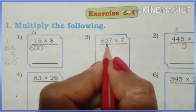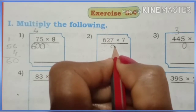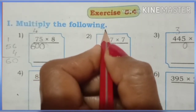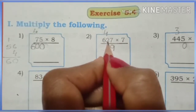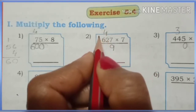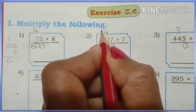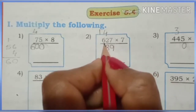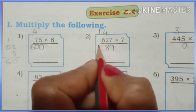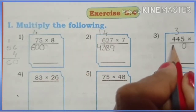Second question: 627 multiplied by 7. 7 sevens are 49 — write 9 in units place, carry 4. 7 twos are 14, plus 4 is 18 — write 8 in tens place, carry 1. 7 sixes are 42, plus 1 is 43. Now we go to the third question.